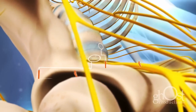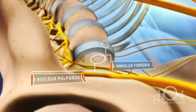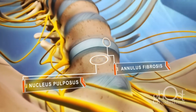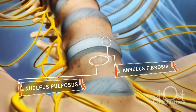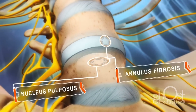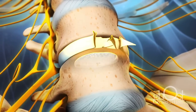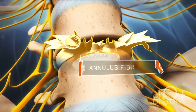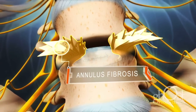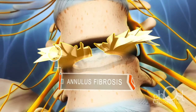A spinal disc consists of two main parts: the jelly-like nucleus pulposus in the disc center and the outermost layers, collectively called the annulus fibrosus. These two components facilitate the spine's movement and provide support for the vertebrae.